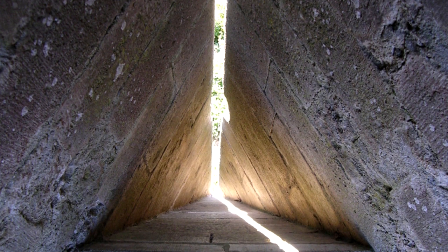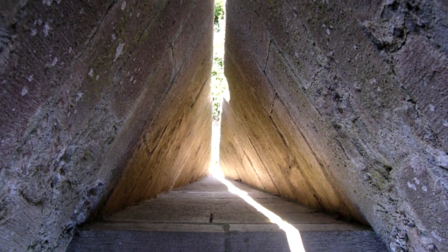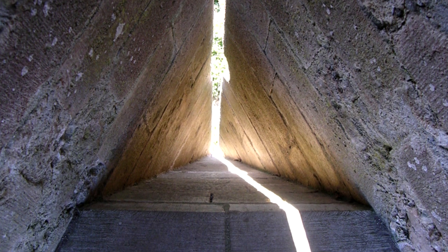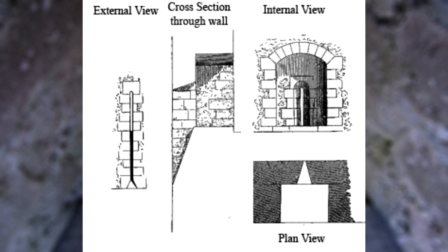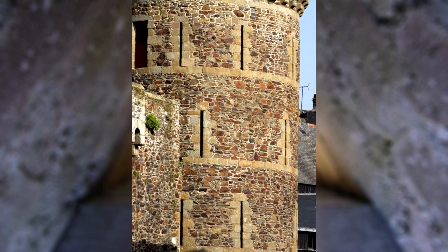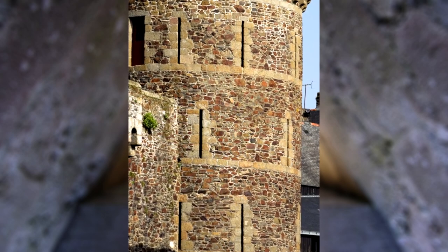Arrow slits were angled in a way so they could provide cover as close as possible to the foot of the wall, and they achieved angles as small as 5 degrees from a vertical arrow slit in some cases. This is also why towers usually have a large quantity of arrow slits, as they could provide crucial flanking fire to anyone approaching the main wall.